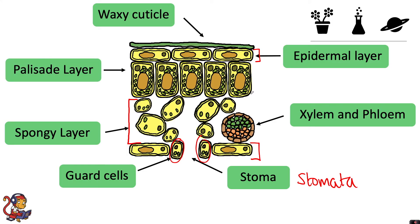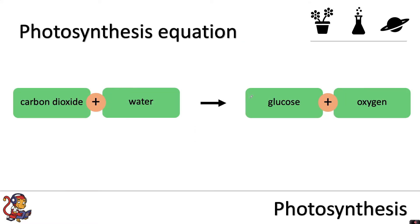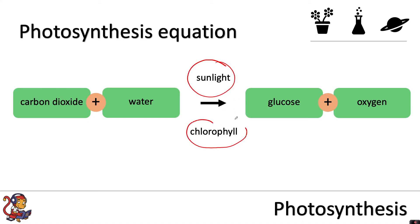The main function of the leaf is to do photosynthesis. The equation for photosynthesis is: carbon dioxide plus water produces glucose plus oxygen. Sometimes above the arrow you may also see sunlight and chlorophyll. They aren't written in the normal equation because they are not reacting or being produced, but both sunlight and chlorophyll are needed for photosynthesis to happen.